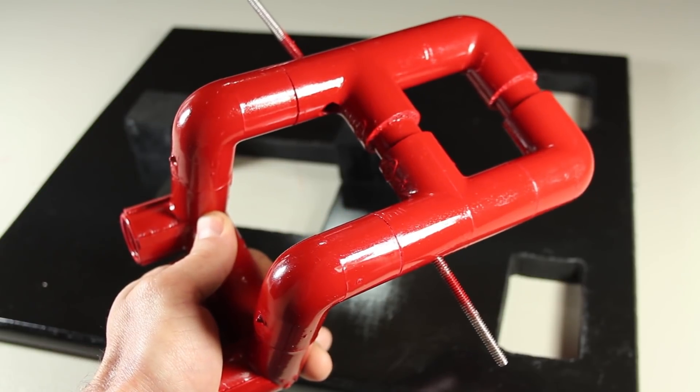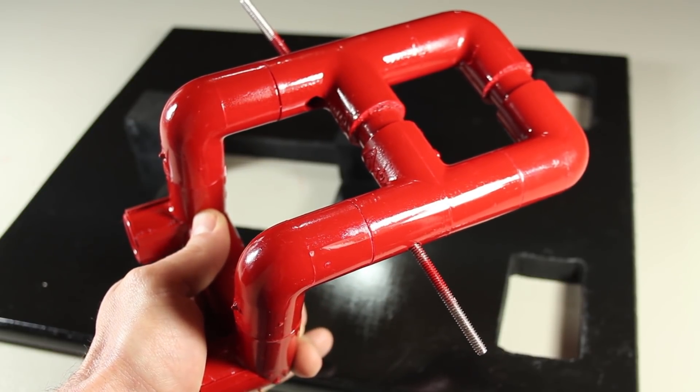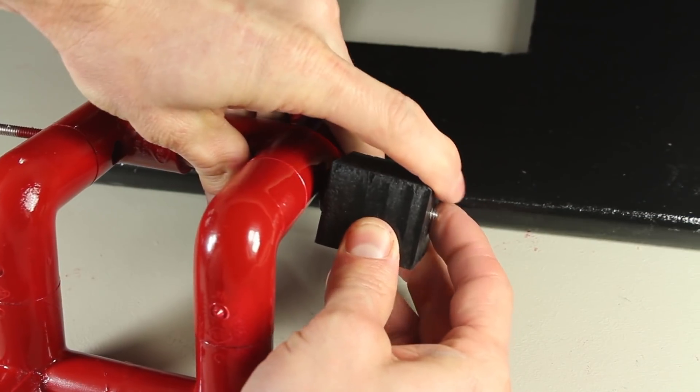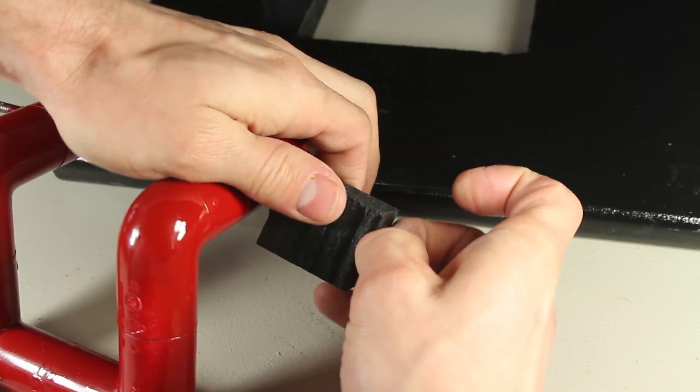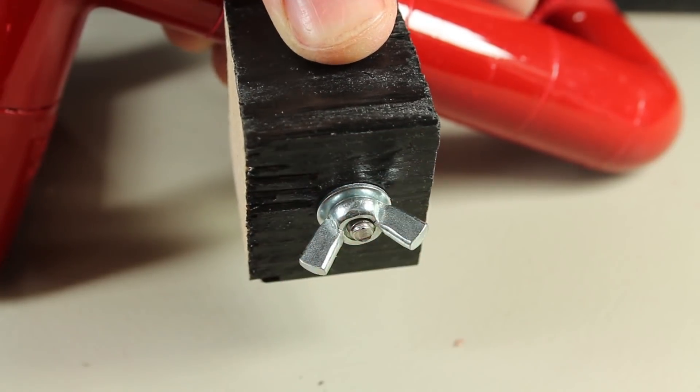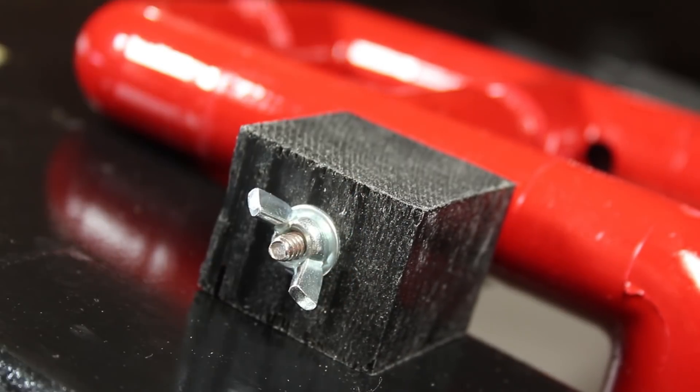I decided to paint the handle red, to give it a nice contrast against the black. We can add a rubber washer to the bolt first, and the block gets pushed on next, until you see about a quarter inch of the bolt poking out on the end. I added a washer and a wing nut to hold it in place, and now we have the ability to adjust the tension on the power lever.